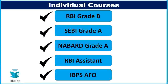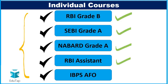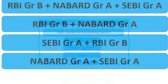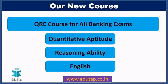Talking about the courses offered by Edutab, you can take a quick snapshot of these slides. Our individual course list includes RBI Grade B, SEBI Grade A, NABARD Grade A, RBI Assistant, and IBPS Agriculture Field Officer. We also offer combo courses including RBI Grade B, NABARD Grade A, SEBI Grade A, RBI-NABARD, SEBI-RBI, and NABARD-SEBI combinations. We are also glad to announce the launch of our new QRE course for all banking examinations, covering quantitative aptitude, reasoning ability, and English.